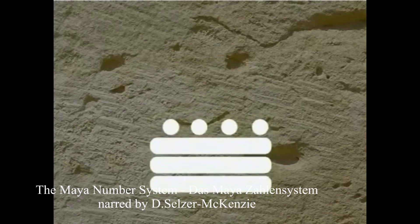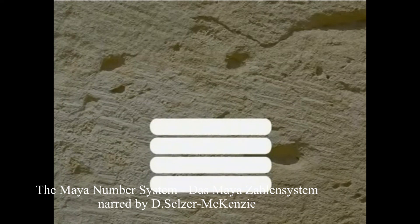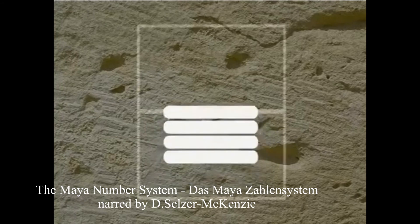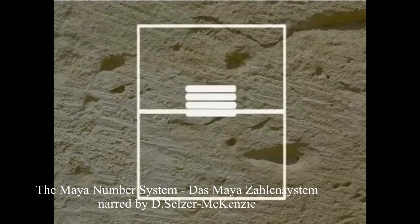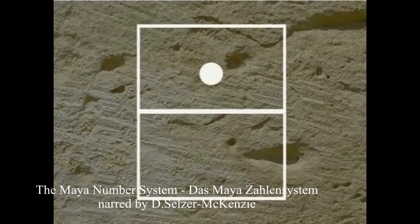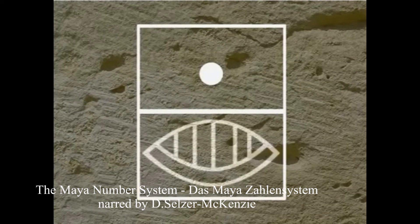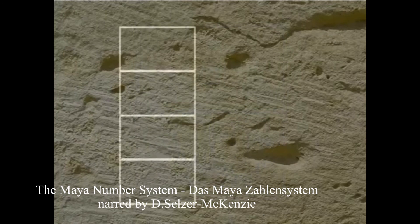Adding one more dot gives a total of 4 bars, or 20 items. But the ones place can only hold 19 items, so this means we go to the 20s place and put a dot there. The dot in this place is equal to 20 to the first power, or 20. Because the ones place is now empty, we use the symbol for 0 to fill it. Otherwise, there would be no way to distinguish between the numbers 1 and 20. So now we can see how place value works in the Maya system.